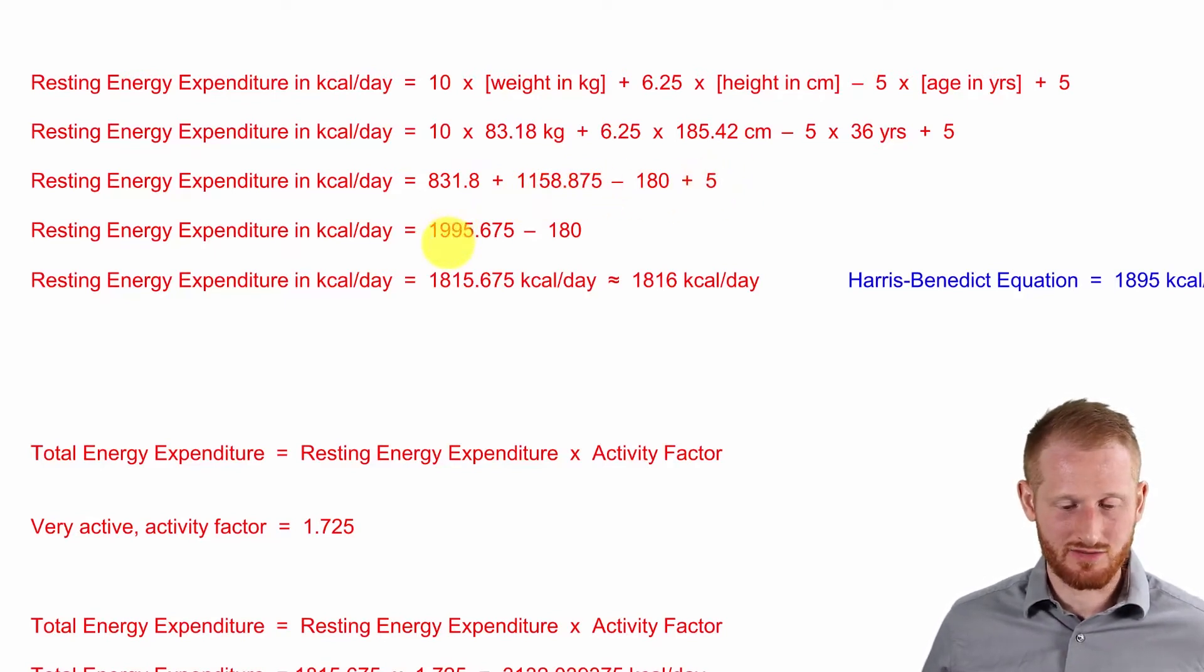That gives us 1,995 with some decimal places. And let's do this subtraction of the 180. That was from his age now. And we end up getting 1,815.675, which we would just round most likely to 1,816 kcals per day.